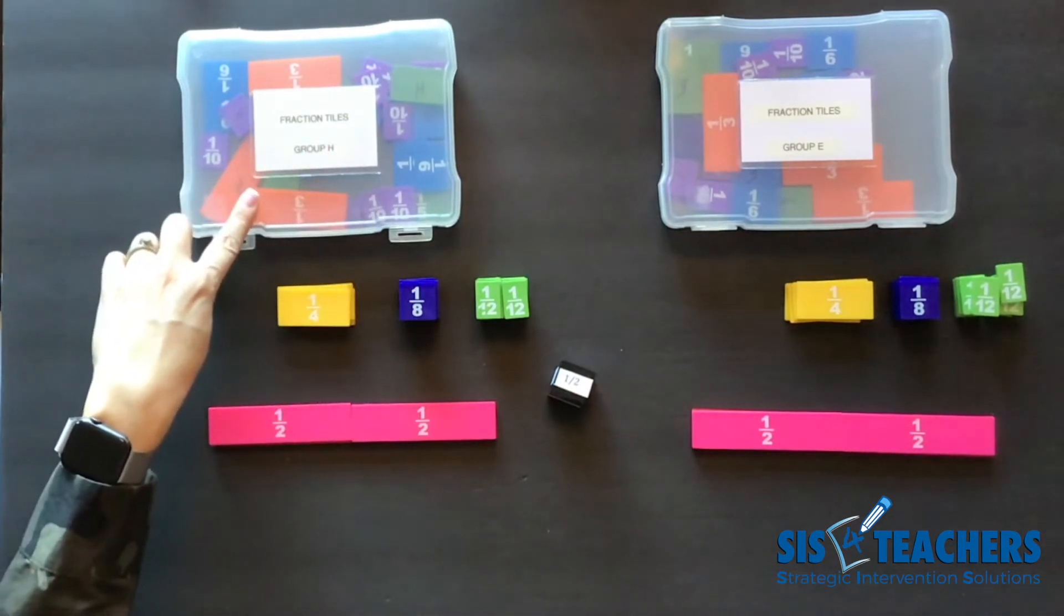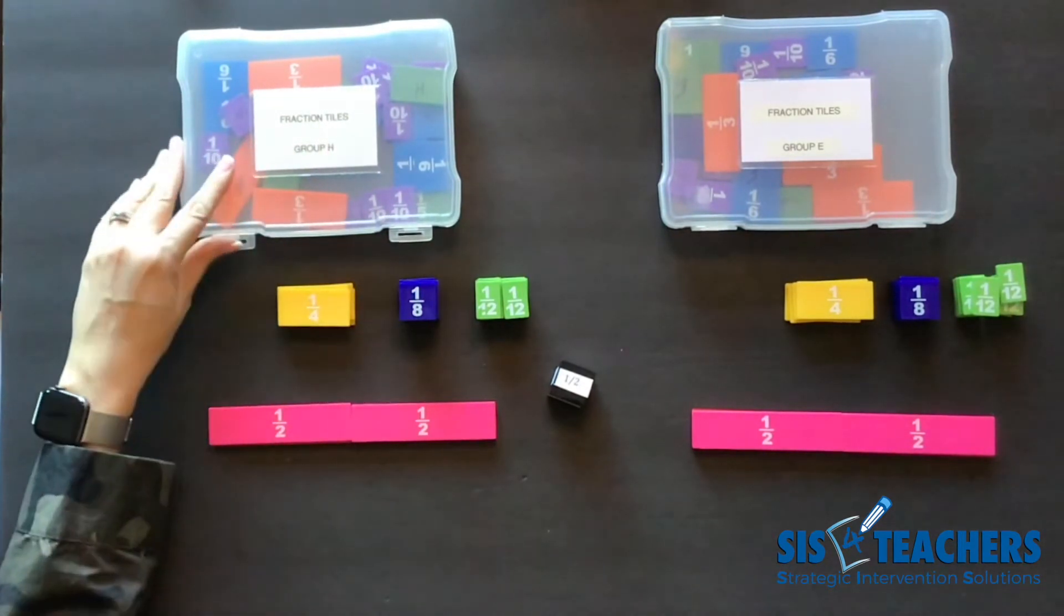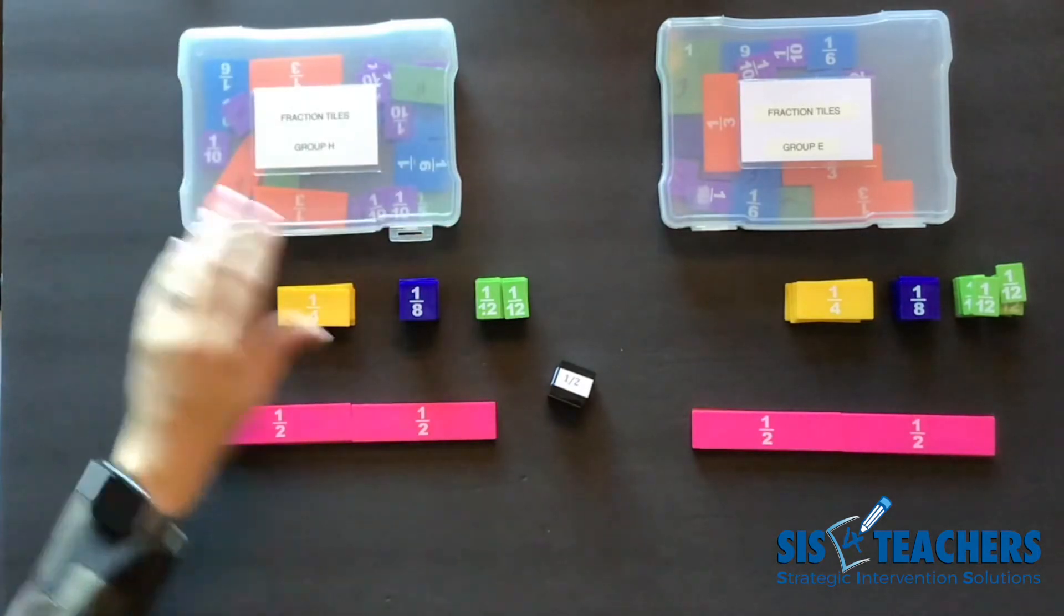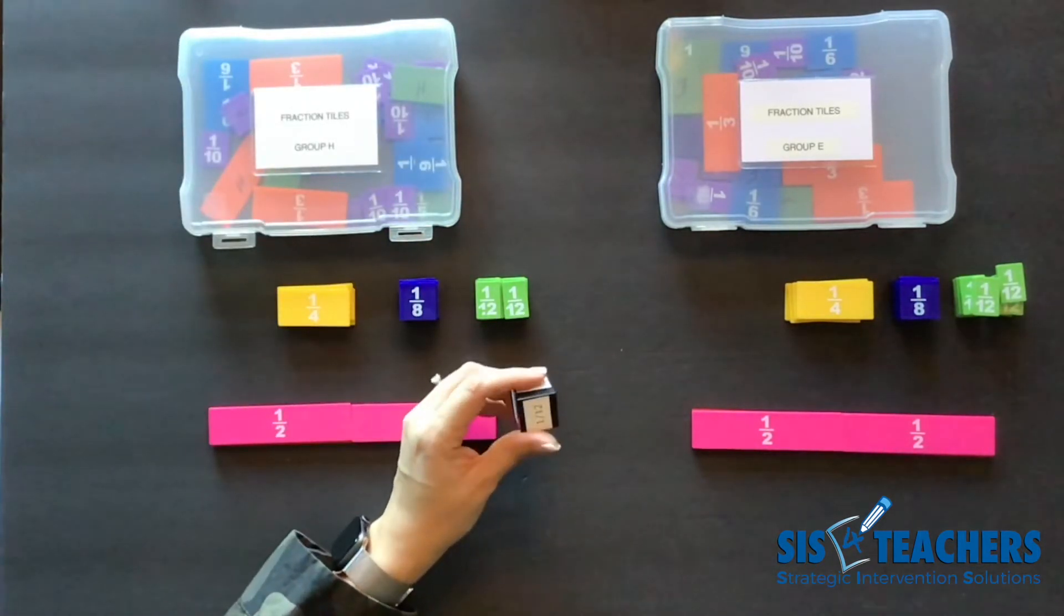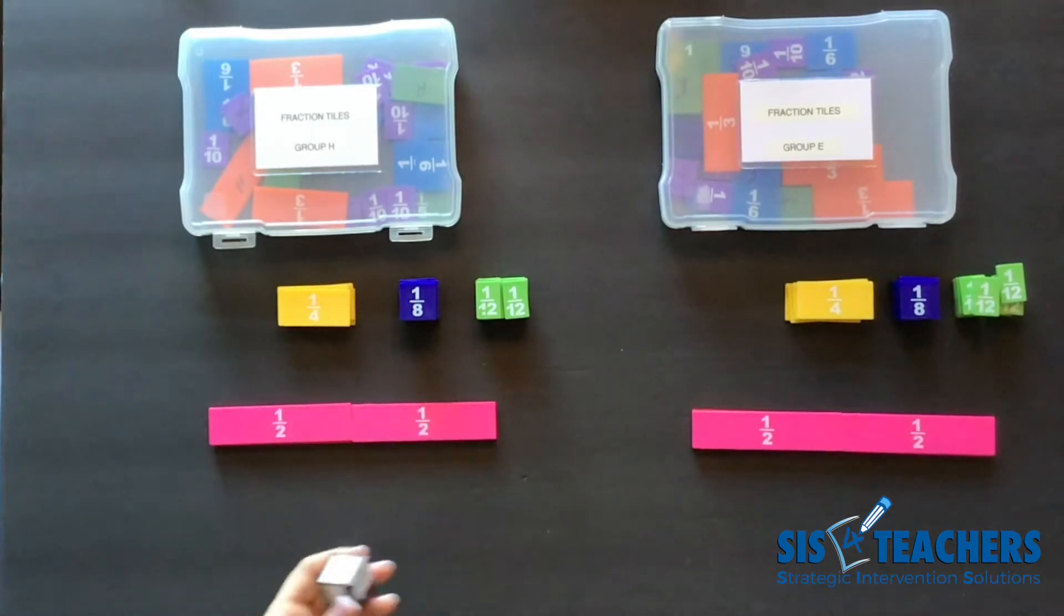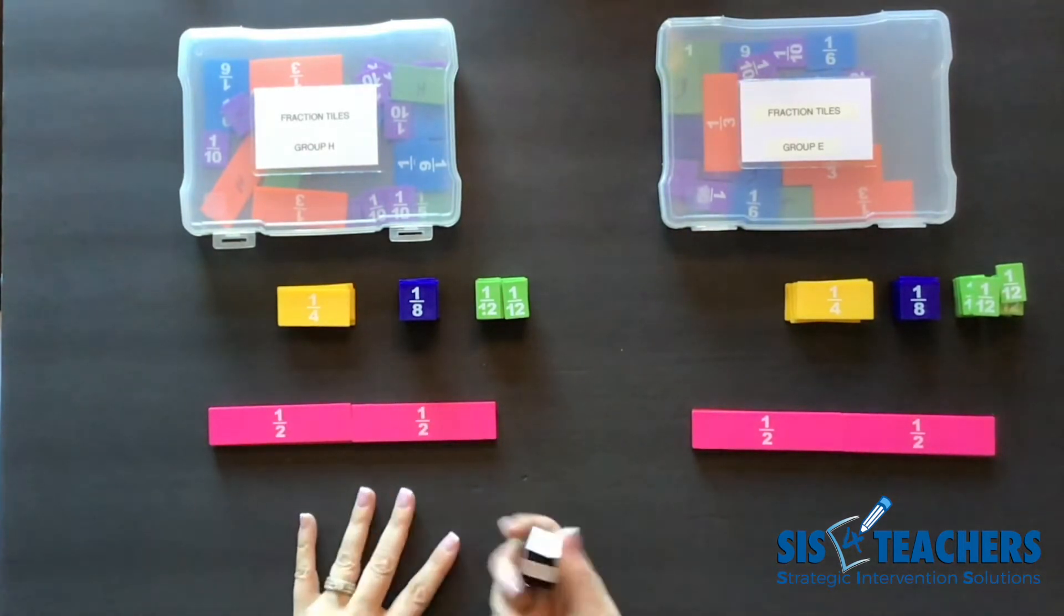If you're new to seeing our tool kit and how it's set up you can watch the YouTube channel on how to set up your math salad bar. I have a fraction die that has half, eighth, fourth, and twelfths on it. There's a few options.